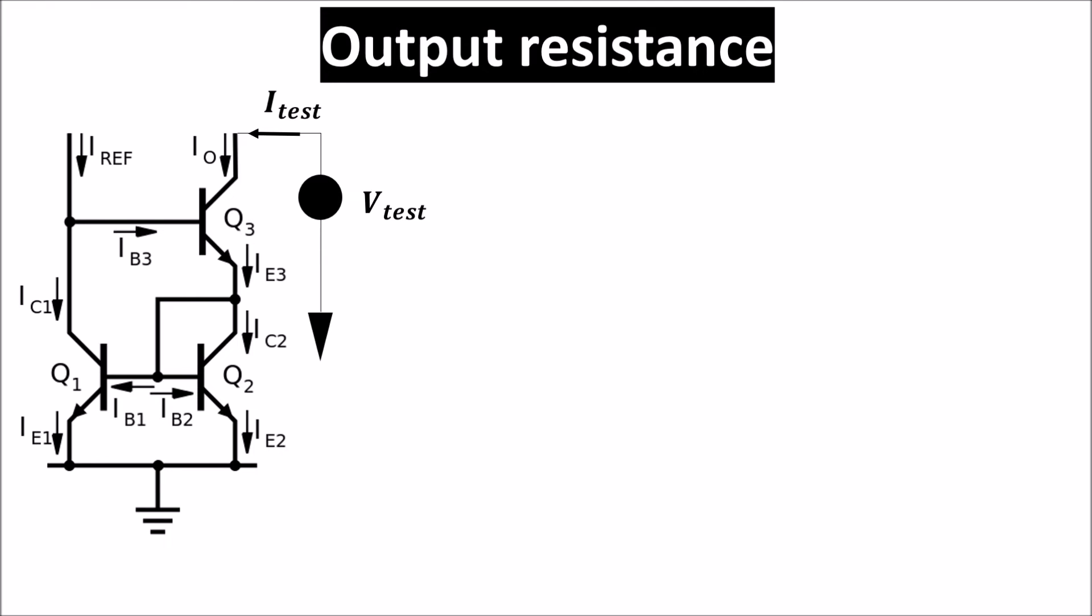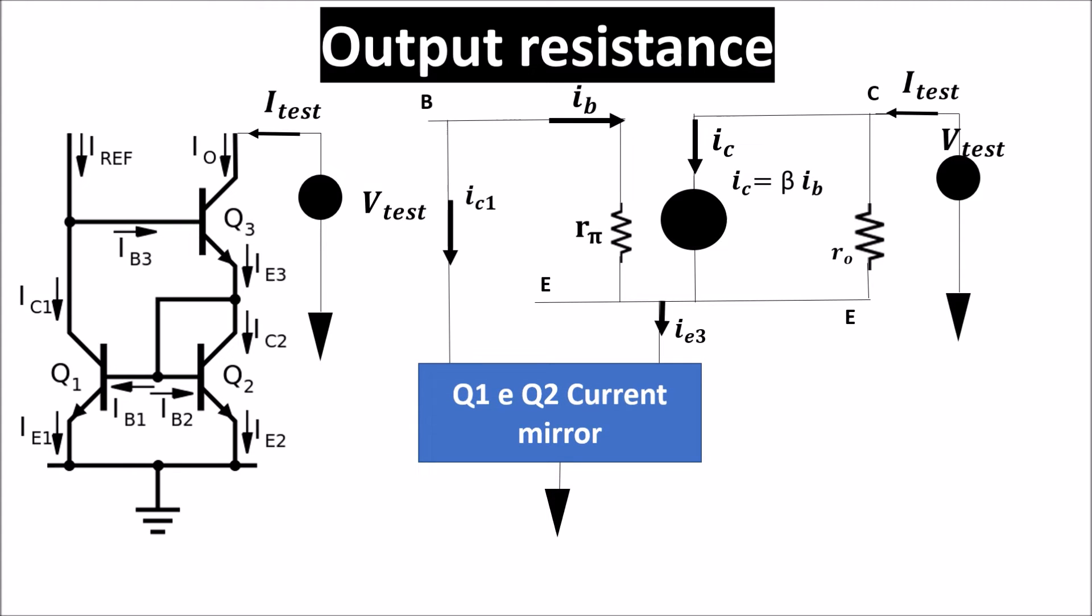We use the small signal hybrid pi model for the transistor Q3 and Q1 and Q2 are in a basic mirror configuration, so we put them in a box in which IC1 is equal to IE3.